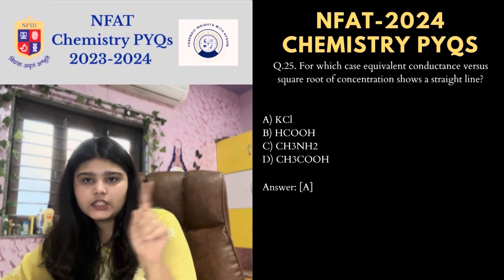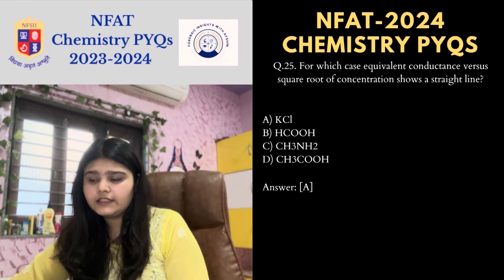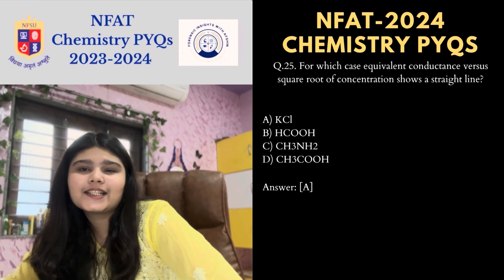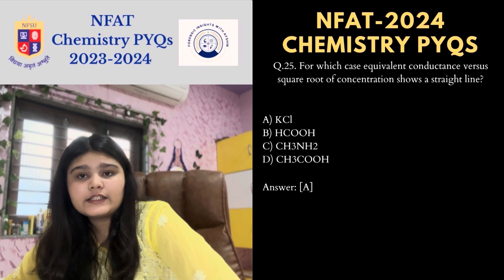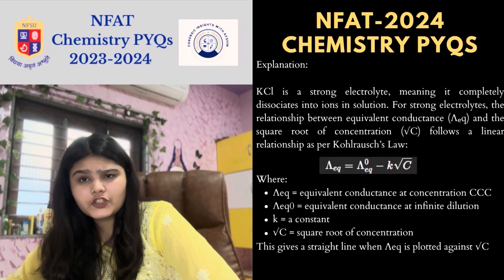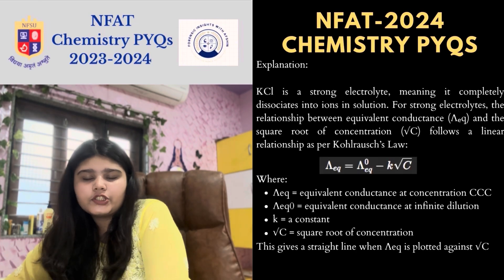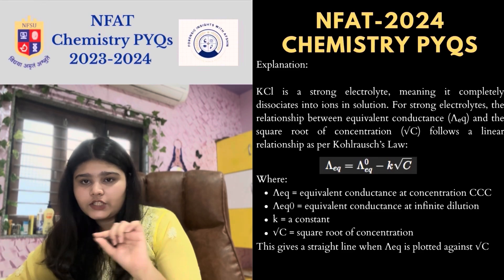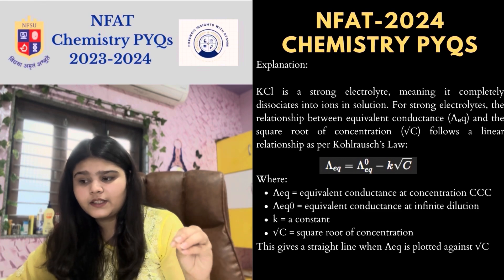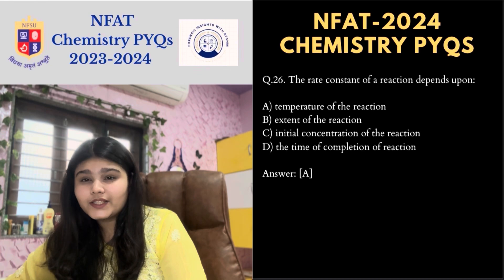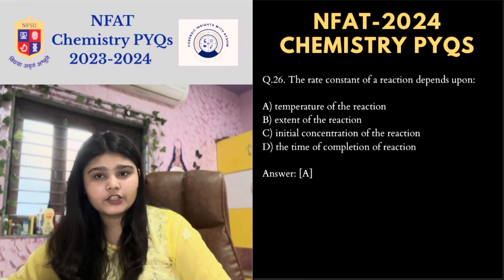Next MCQ: for which case does equivalent conductance versus square root of concentration show a straight line? The correct answer is KCl because it is a strong electrolyte that dissociates completely into ions in solution. In such cases, the relationship between equivalent conductance and square root of concentration is linear, as per Kohlrausch's law.